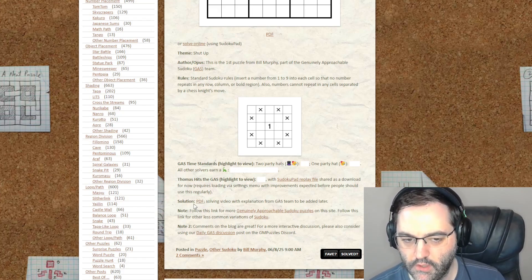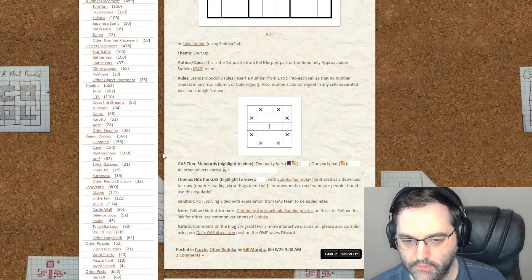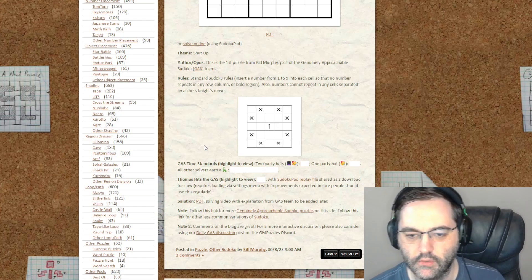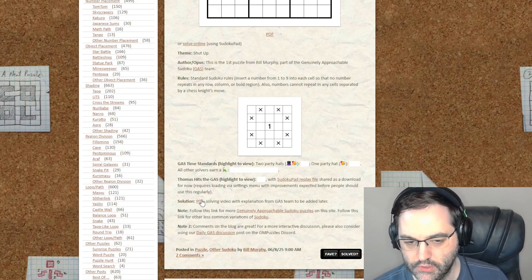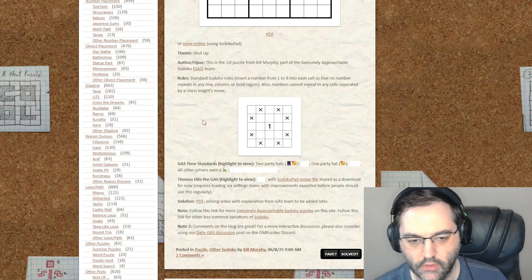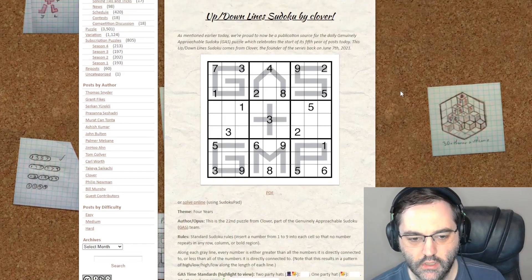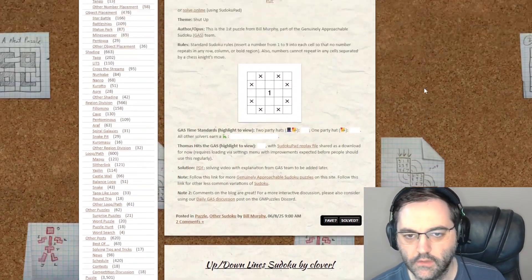As a bonus, some puzzles - I don't know if he intends to do all of them this way - but some puzzles will include Thomas's time and a replay file that you can load in SudokuPath to see how he solved it, to see what order he did things in. I haven't checked this out yet. I'm going to take a look at it later. It also includes a PDF of the solution if you just want to see visually where the digits go. This is the first puzzle by Clover that appeared on our anniversary and what it looks like on the blog. So I hope you'll check that out.